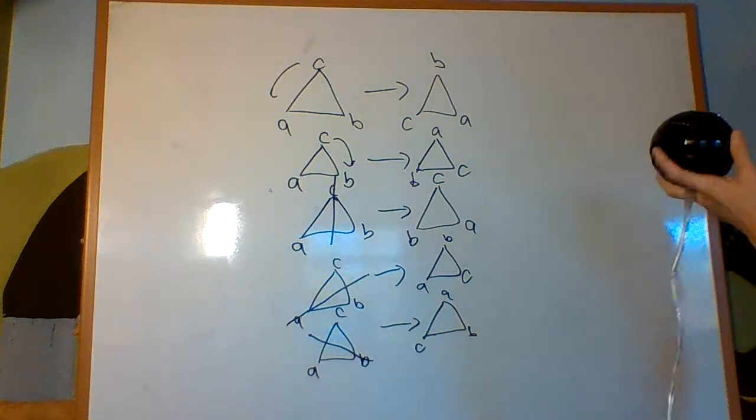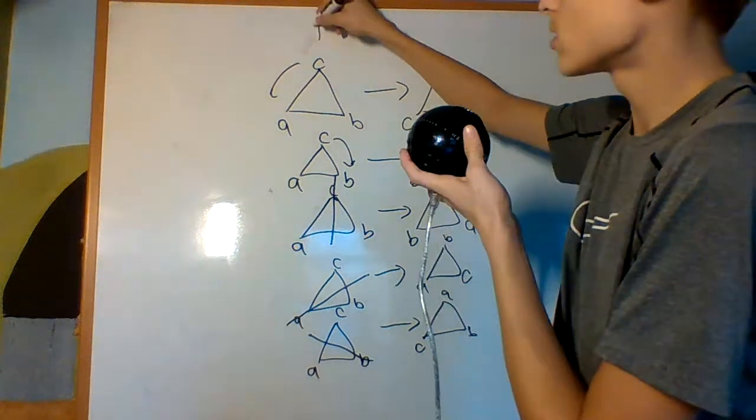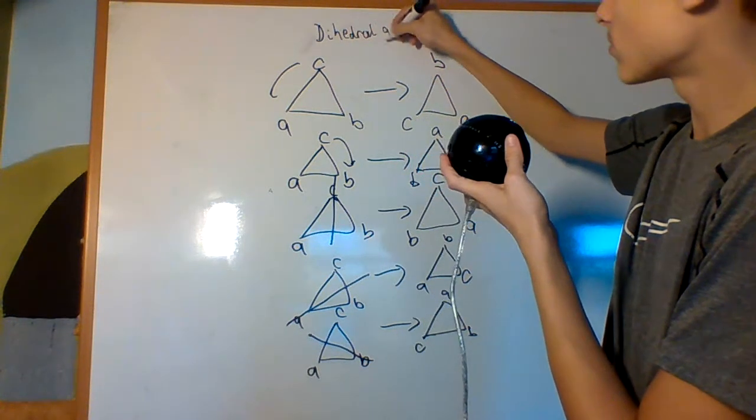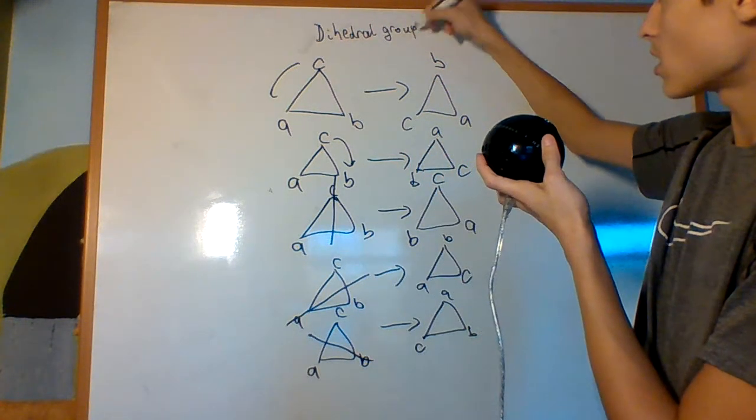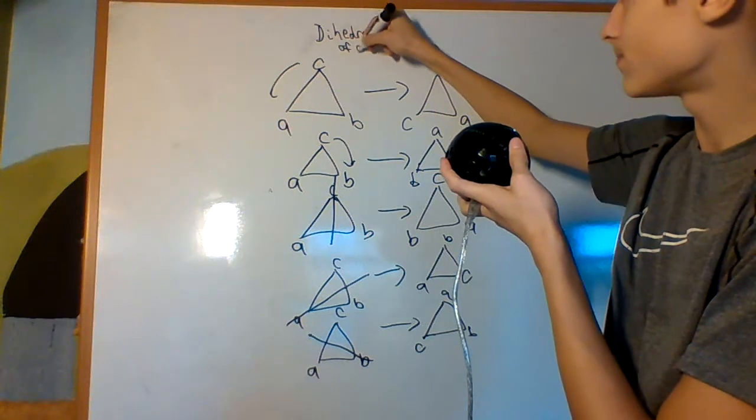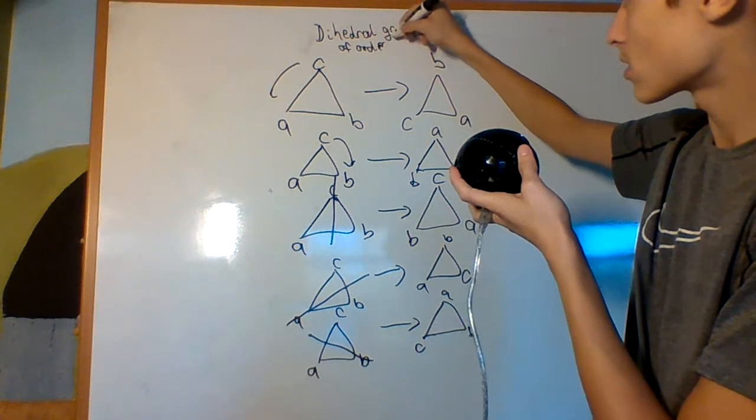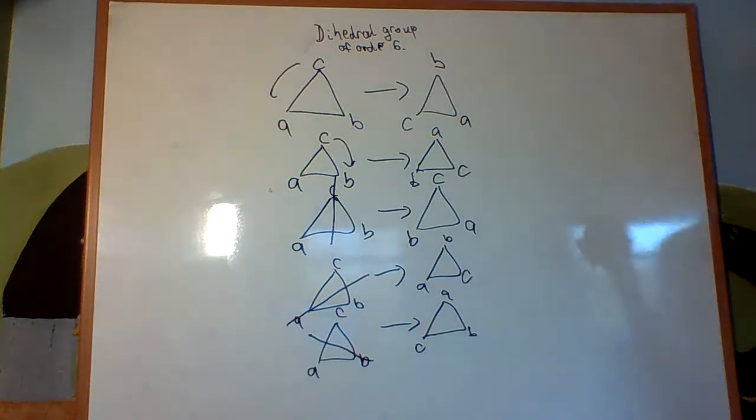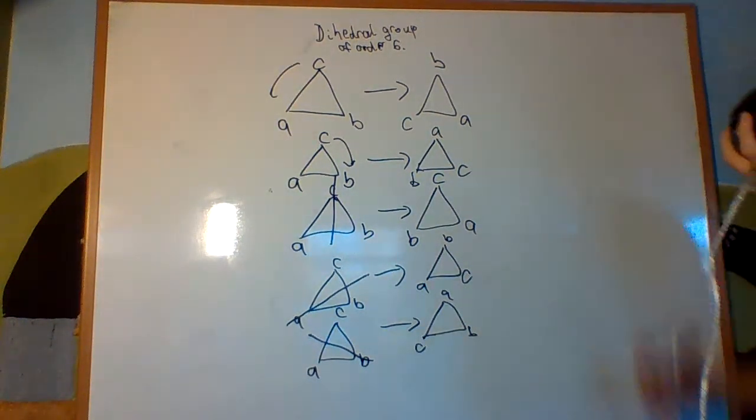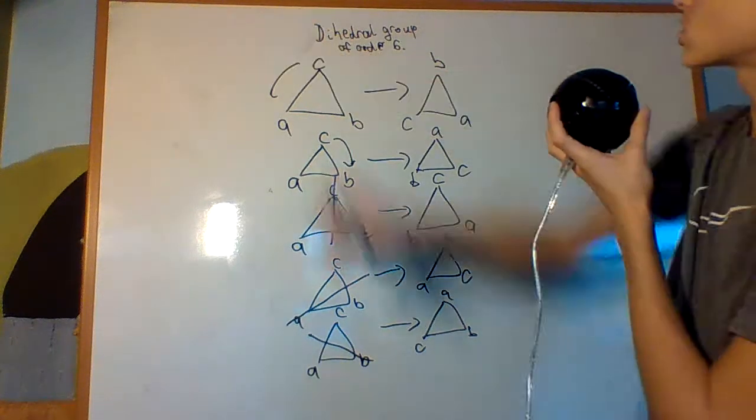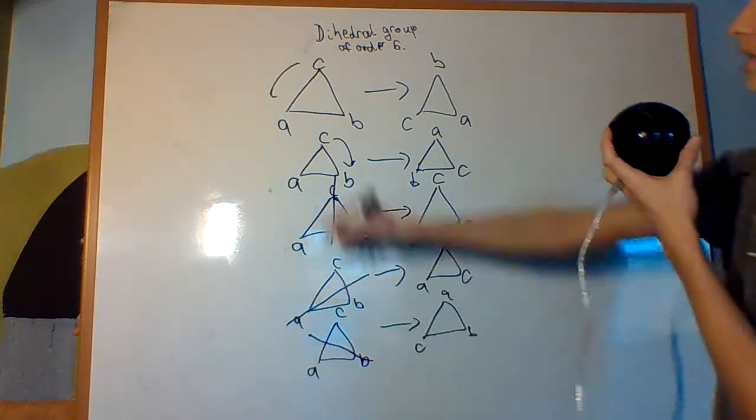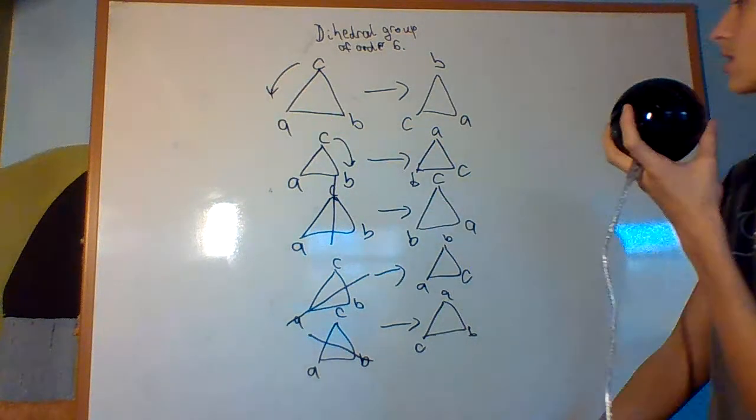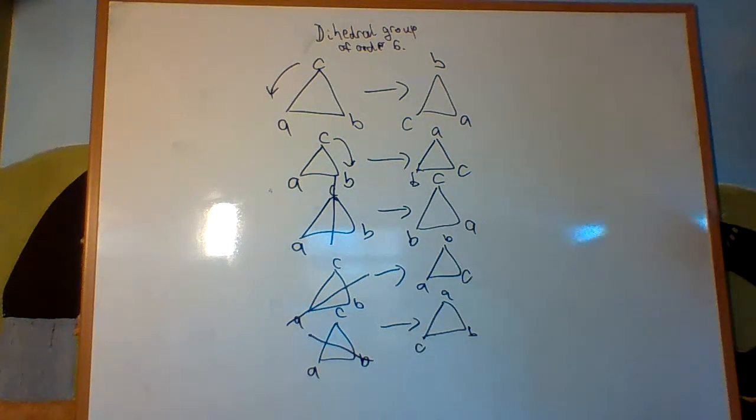Okay, so this is called the dihedral group of order 6. Okay? Why is it called the dihedral group? Well, it's di because there's two different symmetries here. There's rotations, right? Rotations, and then reflections, or flips.